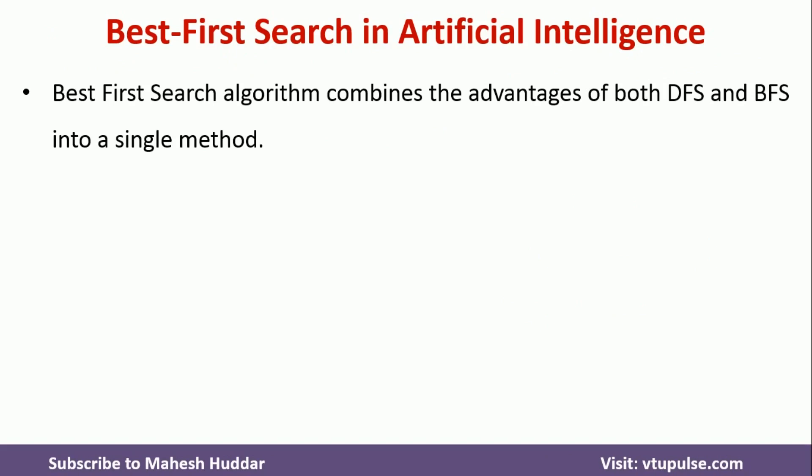Best First Search Algorithm combines the advantages of both DFS and BFS into a single method. We do have some disadvantages and advantages of DFS and BFS, and those advantages are combined into a single method that is called Best First Search Algorithm in Artificial Intelligence.